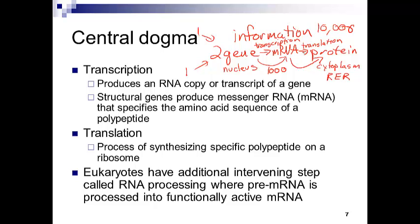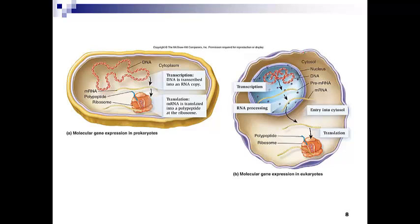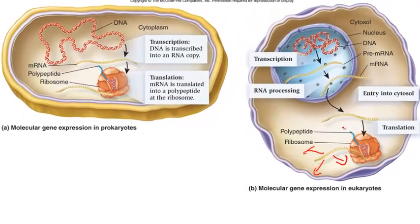In prokaryotes, transcription and translation can all occur at the same time since there is no nucleus — no need to worry about exporting mRNA from a different compartment. In eukaryotes, we have that nucleus, so the transcription step is followed by an RNA processing step, then that RNA must be exported to the cytoplasm where ribosomes can bind and the protein be targeted along the different pathways we learned about in Chapter 5.